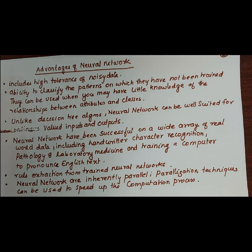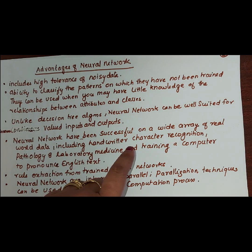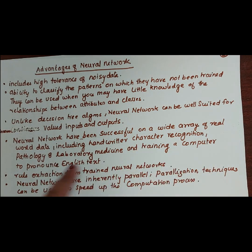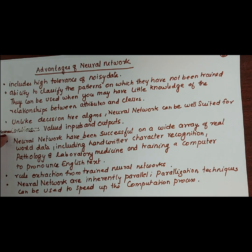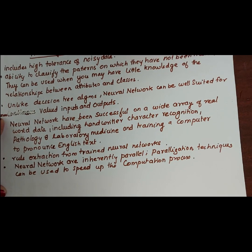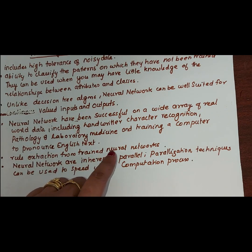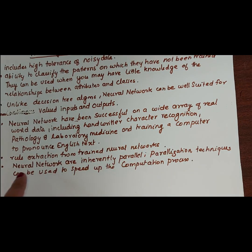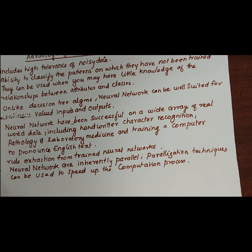Neural networks have been successful on a wide array of real-world data. They can be used in handwriting character recognition systems, pathology, laboratory, medicine, and training computers to pronounce English text. They can also be used for rule extraction from trained neural networks. Neural networks are inherently parallel, so parallelism techniques can be used to speed up the computation process.